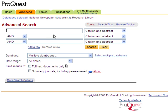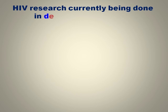When you open the database, it will automatically bring you to the Advanced Search screen. First, let's consider our search terms. Advanced Search allows you to combine search words in a variety of ways using Boolean operators: AND, OR, and NOT. We're looking for information on HIV research done in developing countries.